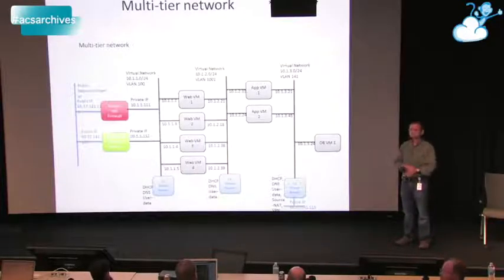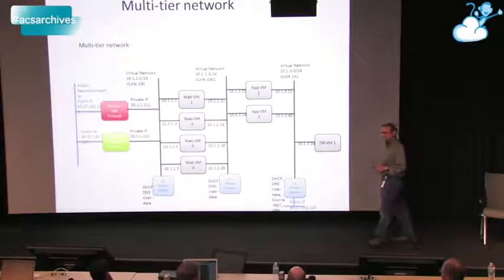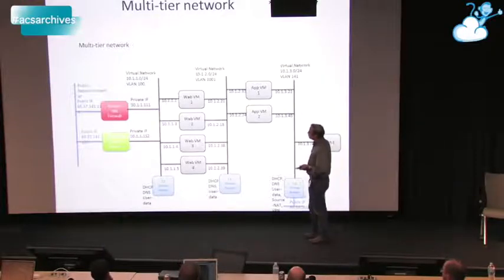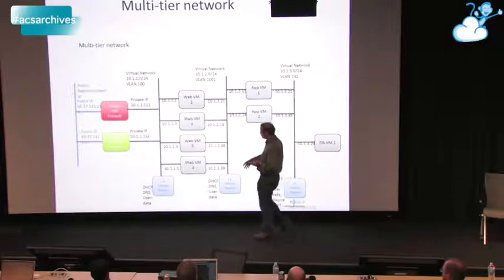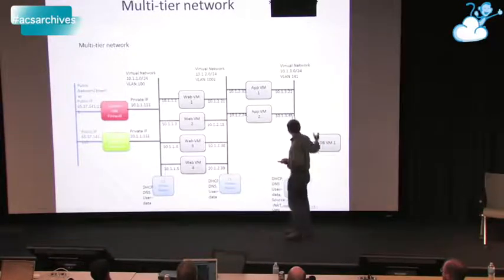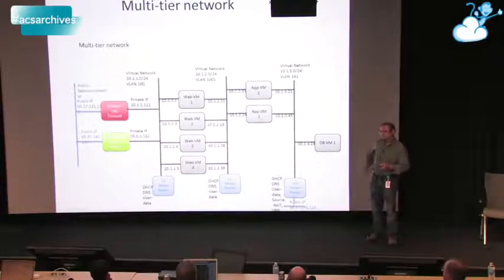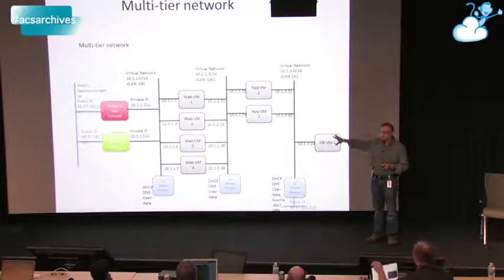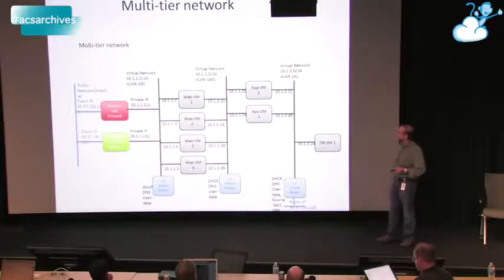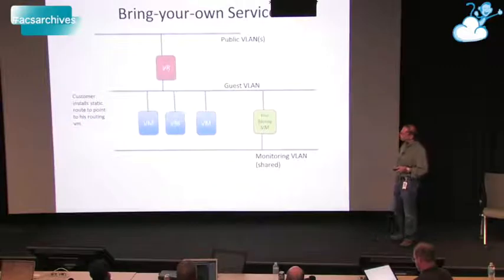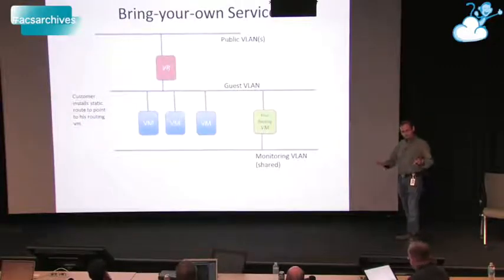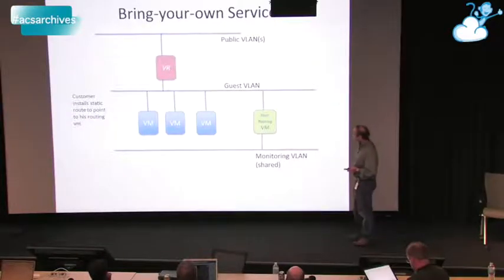This is advanced networking — in basic zone it's kind of hard to do multi-NIC, but in basic zone what you would do is create a web security group, app security group, and DB security group and offer that. This is more traditional enterprise-style networking; security groups are still not very enterprise-y.